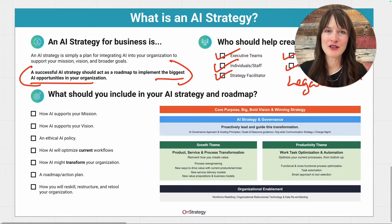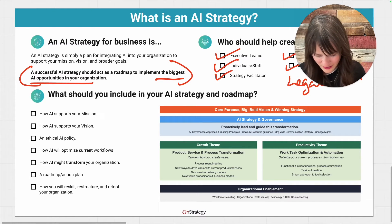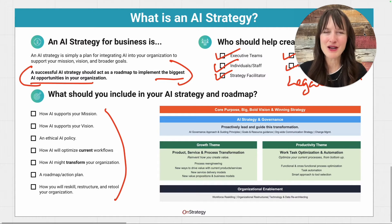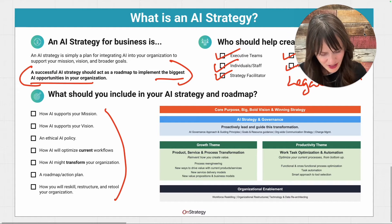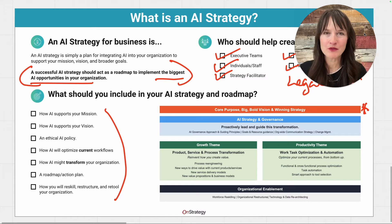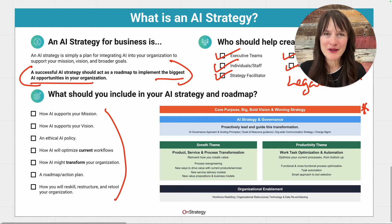What should be included in your AI strategy and roadmap? Here is your checklist — you can pause the video and check it out — but I'm going to use the diagram over here on the right-hand side to really unpack what our AI framework is all about. First things first, you need to make sure that your AI strategy is guarded by and guided by the core purpose of your organization, where you're going, your big bold vision, and your winning strategy. AI is an enabler and an accelerator. It's a means to the end, but it's not the end.